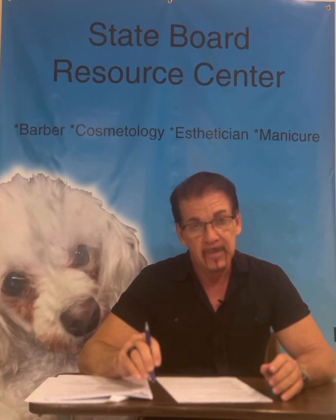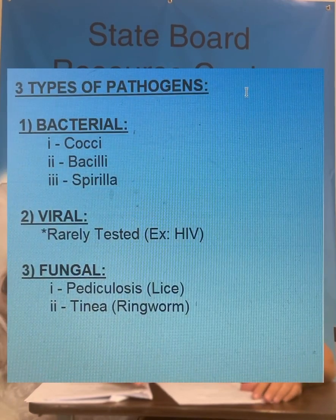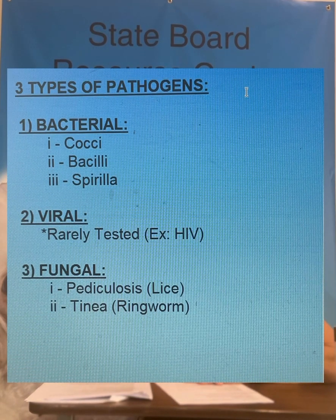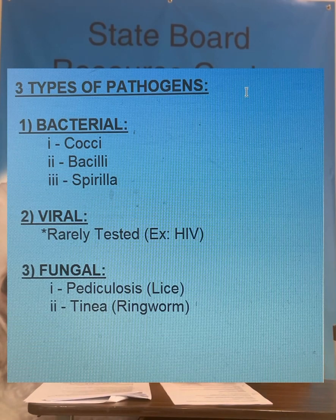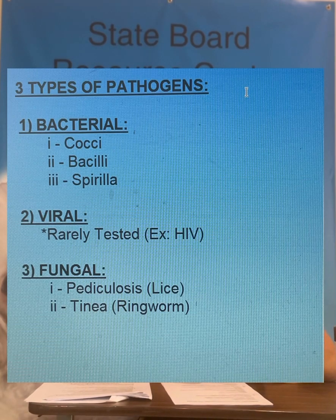In our last video, we left off with pathogens — a fancy word meaning harmful organisms that cause disease or infection. There are three types of pathogens you will need to understand on your test: bacterial pathogens (coci, bacilli, and spirilla), viral pathogens, and fungal pathogens such as tinea.